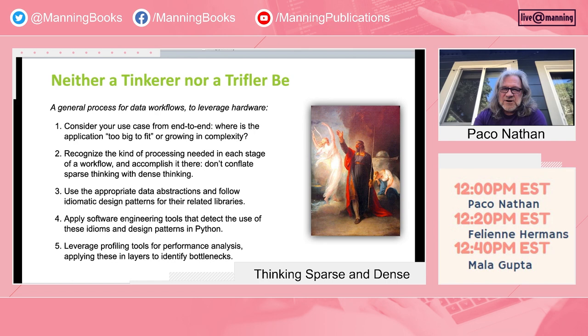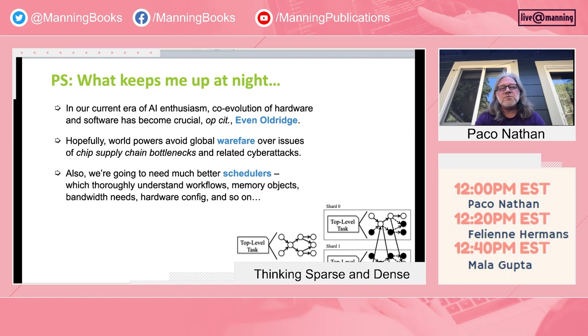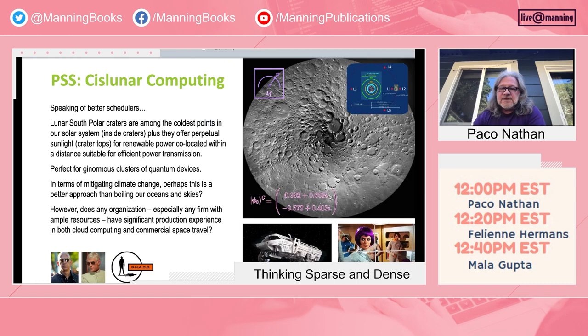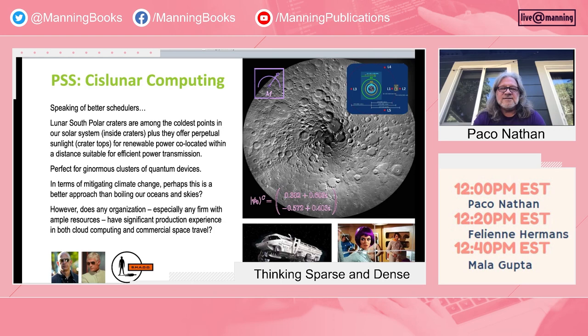A few things keep me up at night: the co-evolution of hardware and software is becoming super crucial. Also, world powers are having conflict over chip supply chain bottlenecks and related cyber attacks, and I'm hopeful that doesn't go further. We're also going to need much better work on schedulers. Interestingly, the south polar craters on the moon are some of the coldest points in the solar system, but they also have perpetual sunlight — which would be a great place to drop large clusters of quantum devices. It's a great approach to mitigate climate change by moving our cloud computing off to the moon with renewable resources. Is there any organization that can handle both cloud computing and commercial space travel? I don't know.